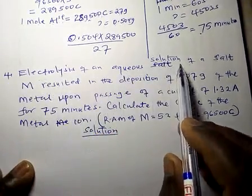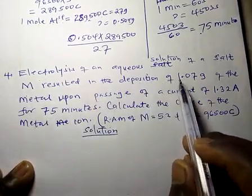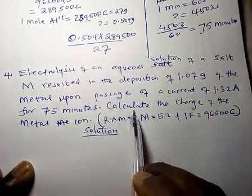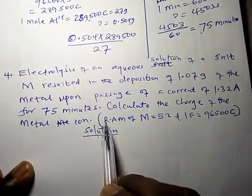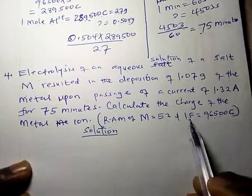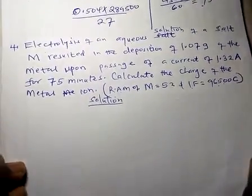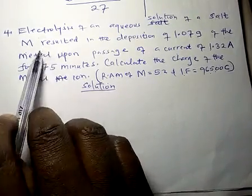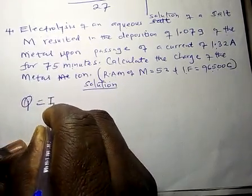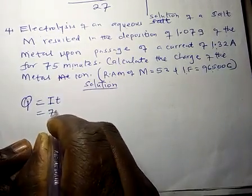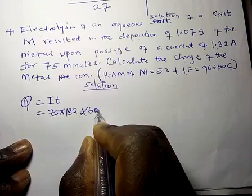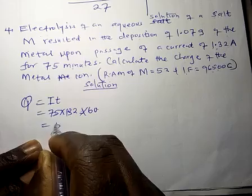Electrolysis of an aqueous solution of a salt M resulted in deposition of 1.07 grams of the metal upon passage of a current. Calculate the charge of the metal ion. RAM is given. 1 Faraday represents 1 electron. If there are 2 electrons it means 2 Faradays, 3 electrons means 3 Faradays. We start by calculating the quantity of electricity: current times time — time must be converted to seconds. This gives us 5,940 coulombs.